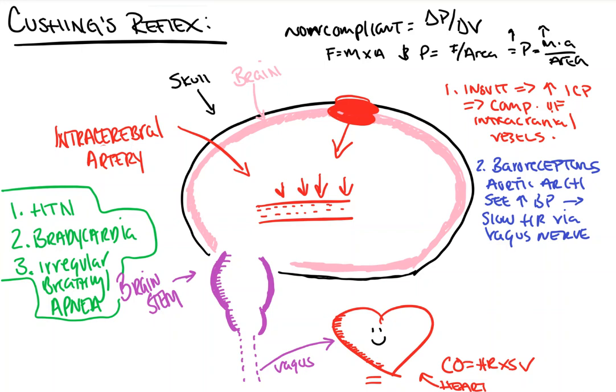A small note worth remembering: Cushing's ulcers. This is part of stage two. As parasympathetic discharge increases, it results in a rest-and-digest tone in the body, which produces increased digestive activity — and in turn, the stomach produces more acid. Increased gastric acid output can result in ulcers. That's why patients in the ICU with head trauma are often on GI prophylaxis — to prevent Cushing's ulcers.